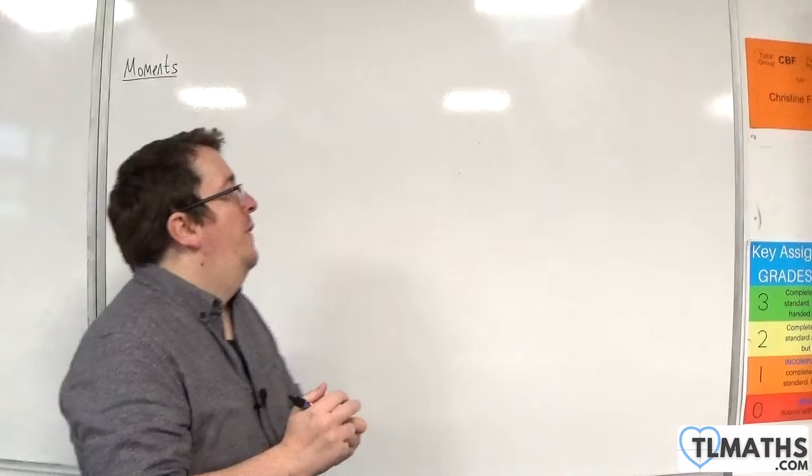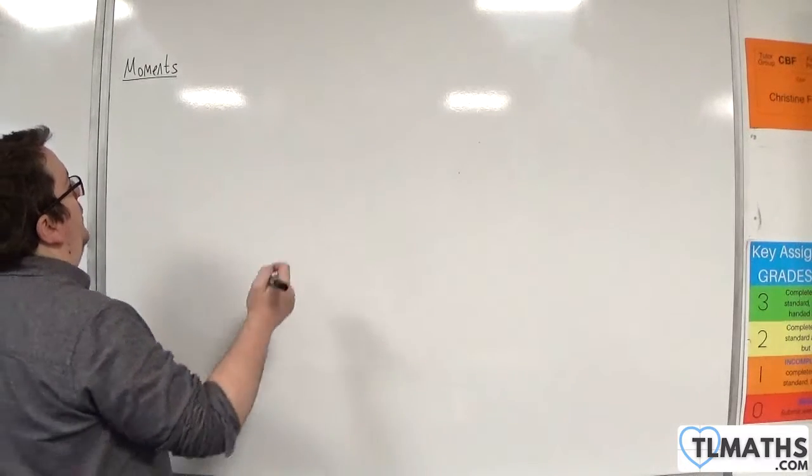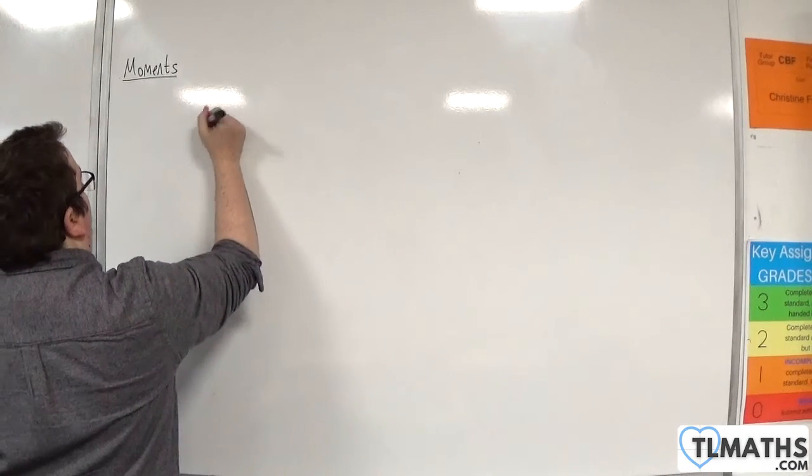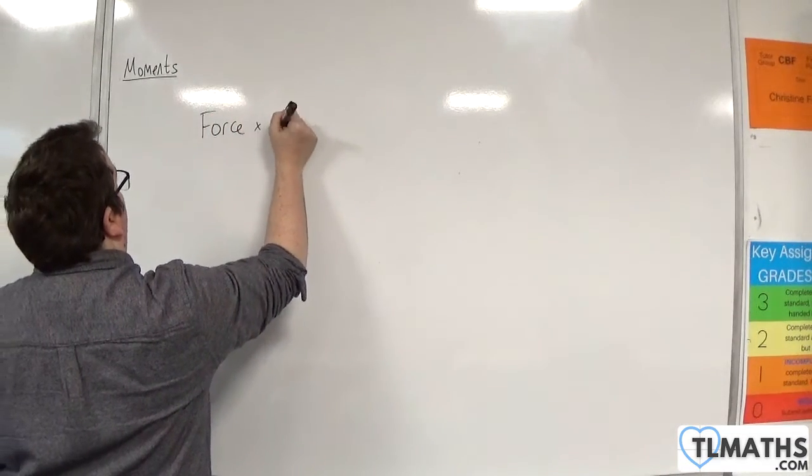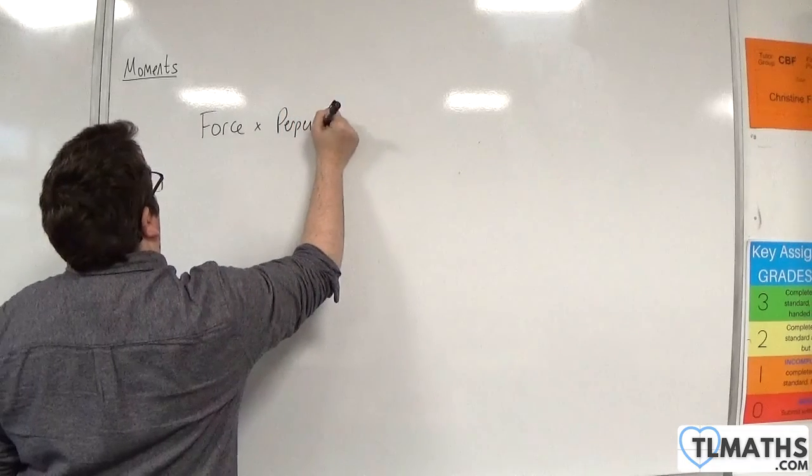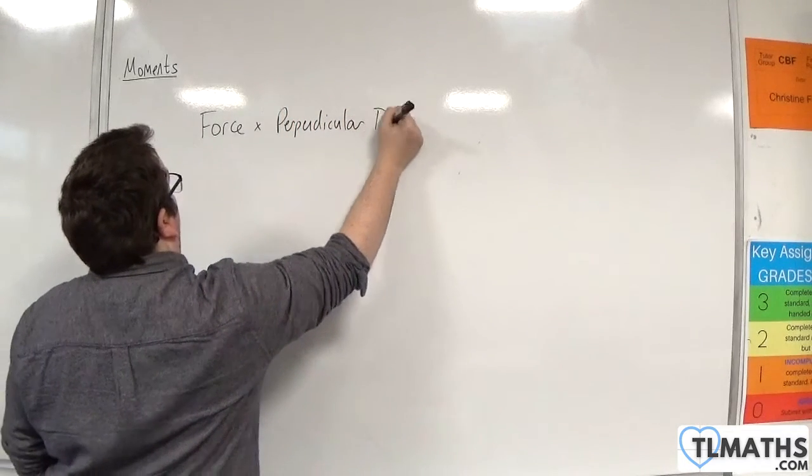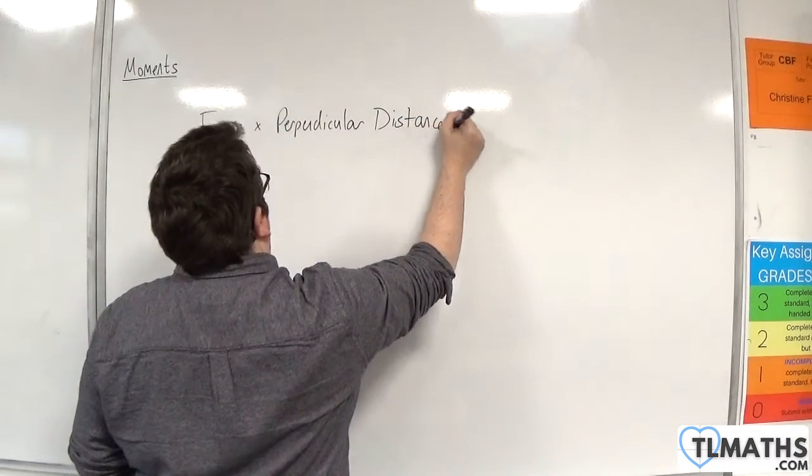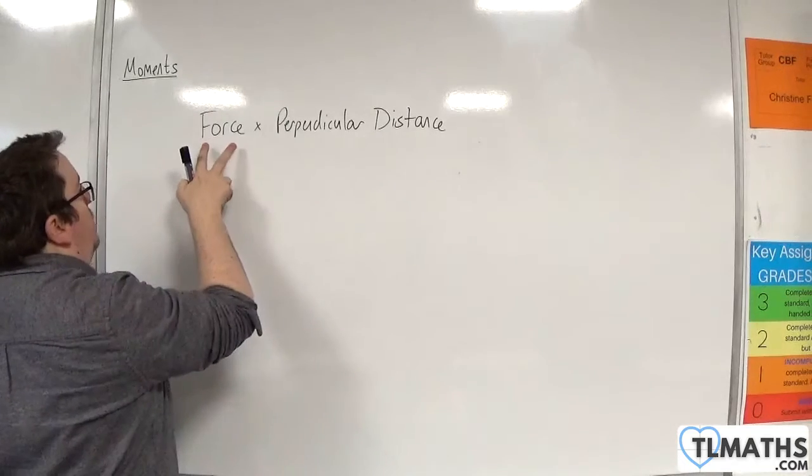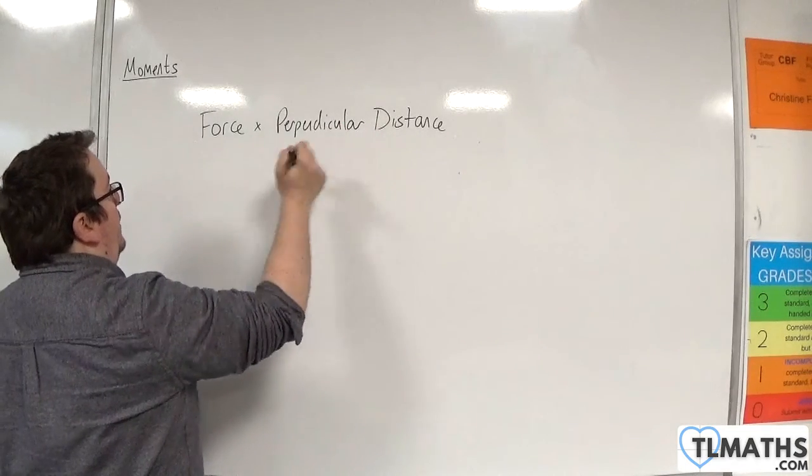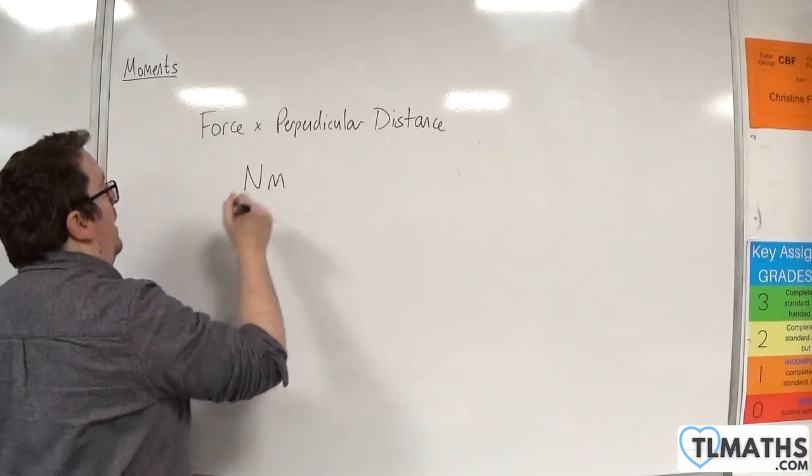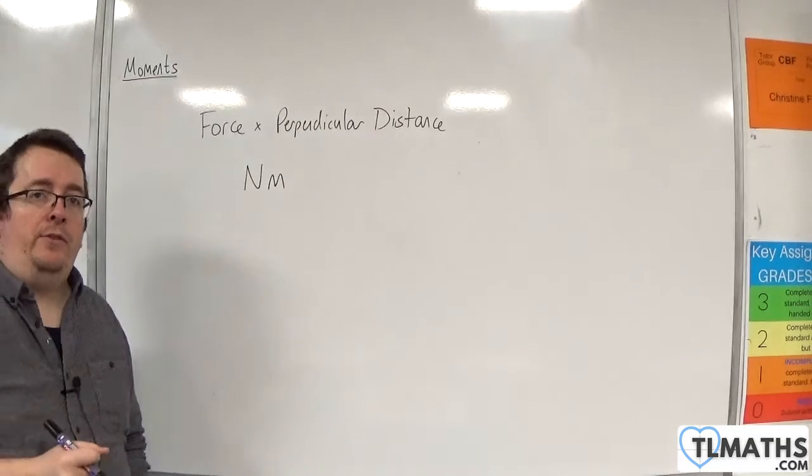If you recall that a moment is found by multiplying a force by a perpendicular distance. So in units, you've got newtons times by metres. So a moment will have newton-metres as its units.